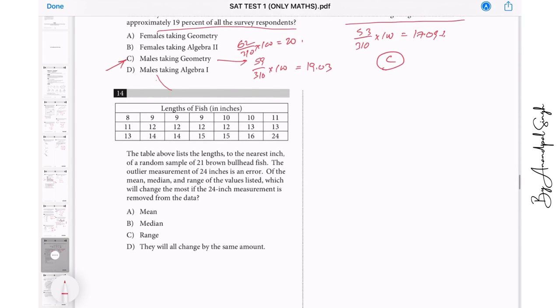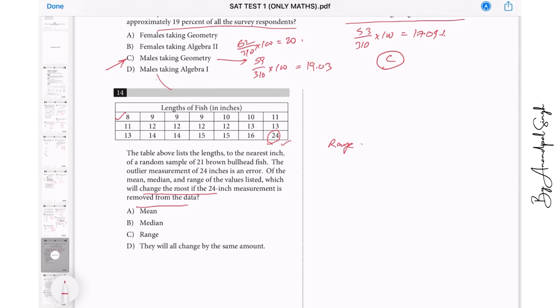The length of fish in inches. The table lists the length to the nearest inch of a random sample of 21 brown bullhead fish. The outlier measurement of 24 inches is an error. This is an error, so when you remove this error, which of the following will change the most? See, mean will not change so much, median will also not change so much, but if you observe the range, because the range is the difference between the maximum and the minimum.